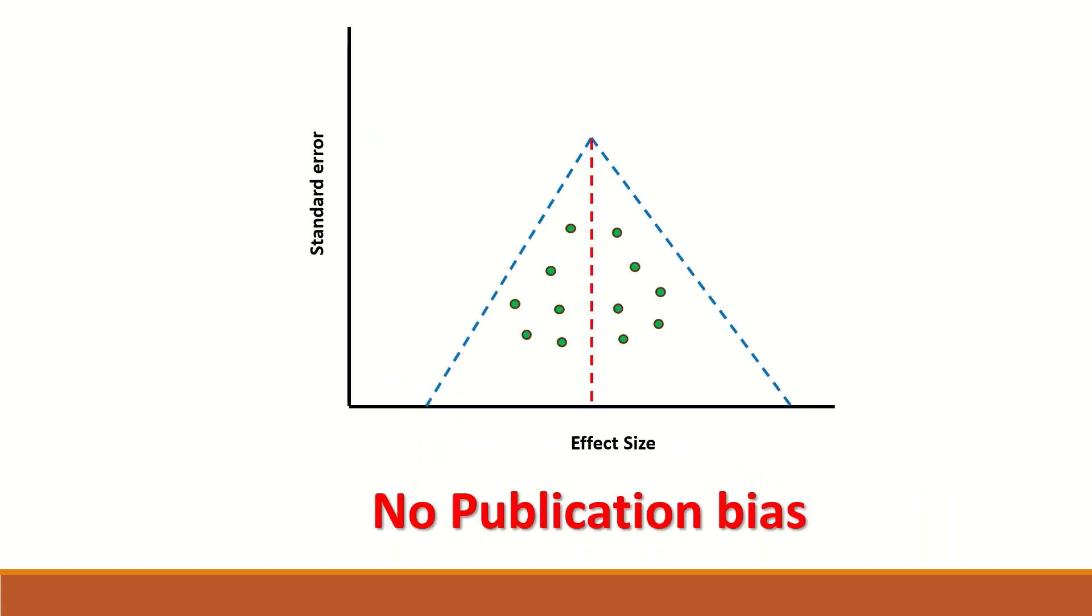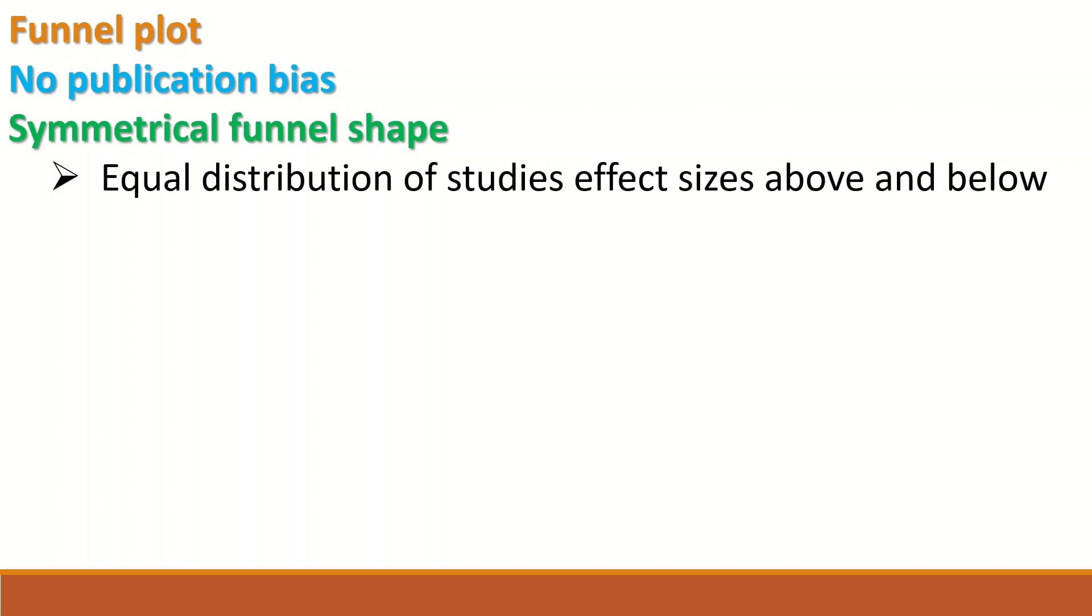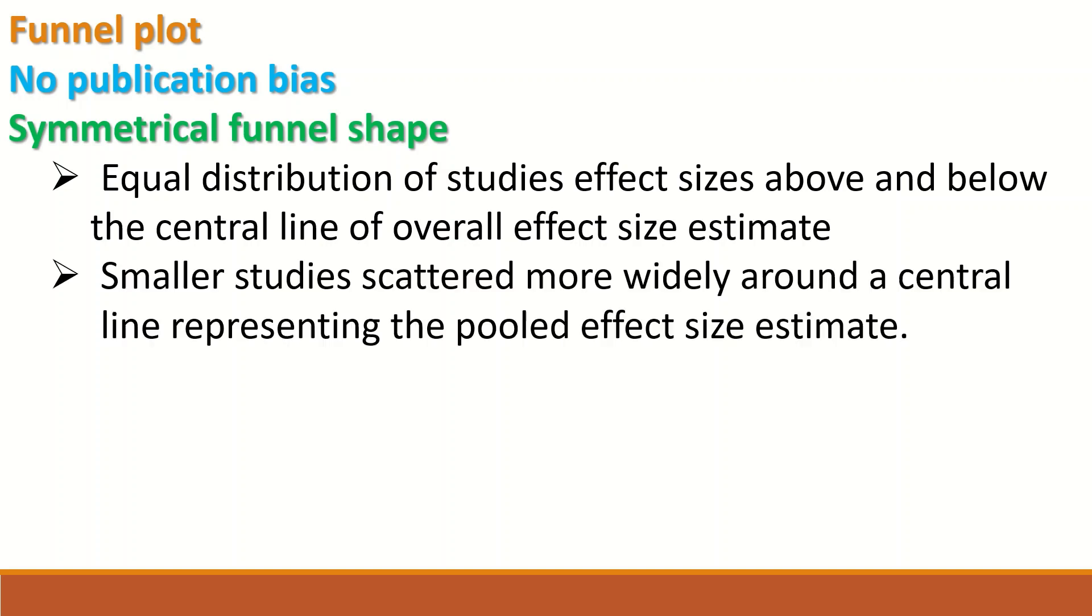When there is no publication bias, the distribution of the effect size for each individual study is equal on the right section to the left section. So there is symmetry. When there is no publication bias, there is a symmetrical funnel shape in which there is equal distribution of study effect size above and below the central line of overall effect size estimate. Smaller studies are scattered more widely around the central line representing the pooled effect size estimate.